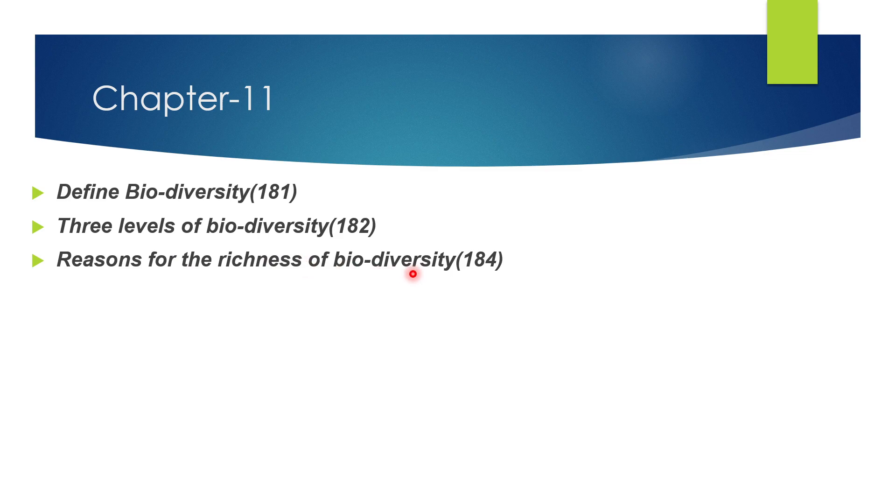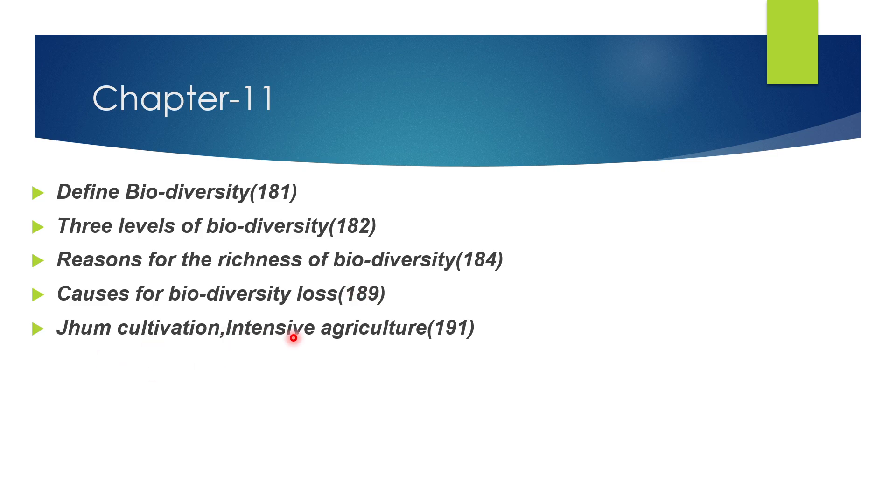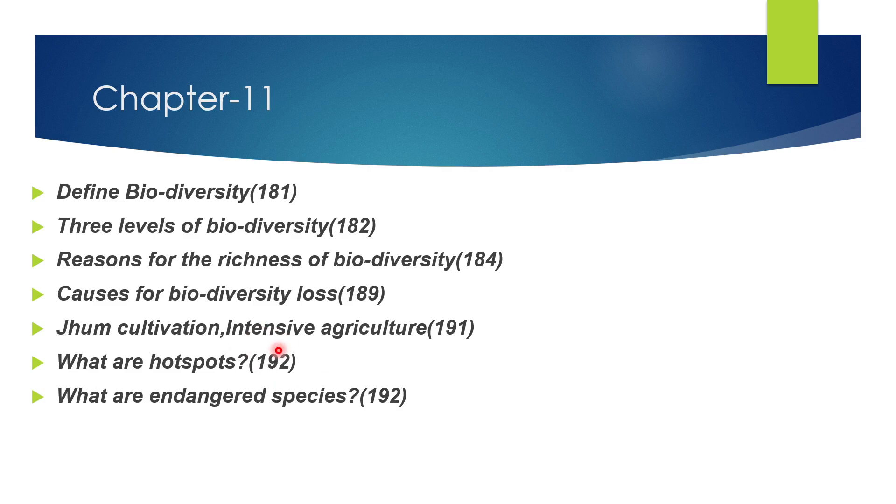Next, what are the reasons for the richness of biodiversity? Important three mark question, page 184. Next, list out the causes for biodiversity loss or loss of biodiversity. Very important five mark question of the chapter, page 189. Next, jhum cultivation and intensive agriculture - just definitions, page 191. What are hotspots and mention some examples? Page 192, very important two mark question. What are endangered species? Page 192, also important.